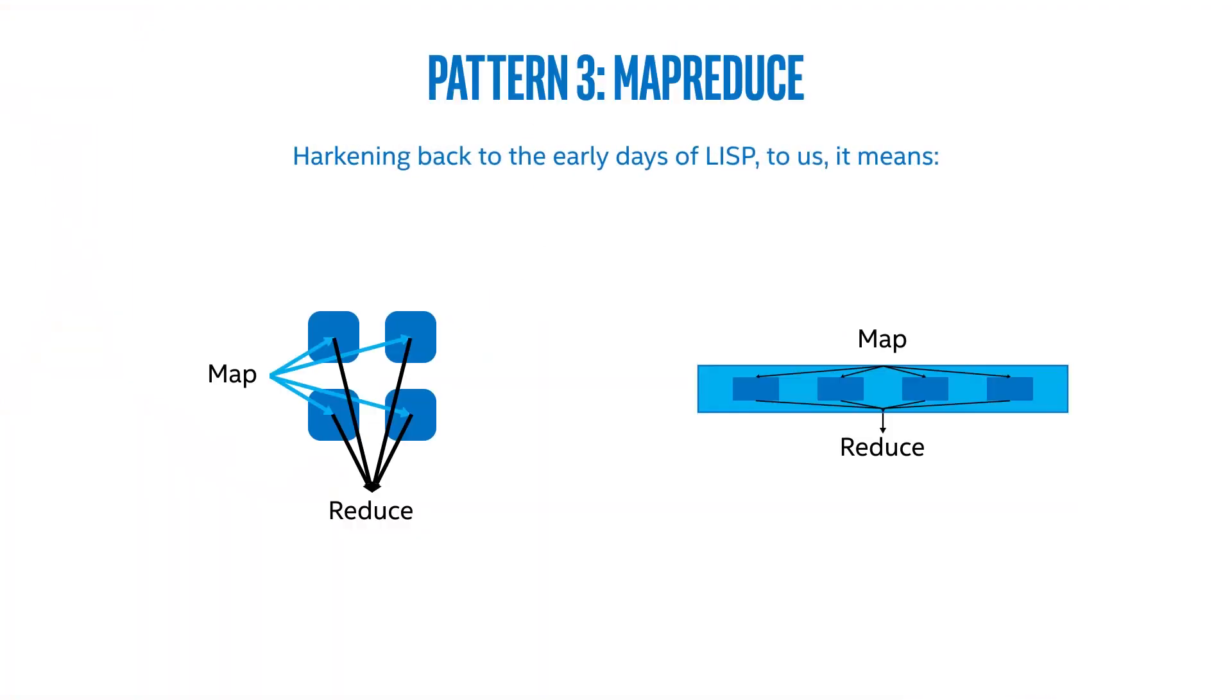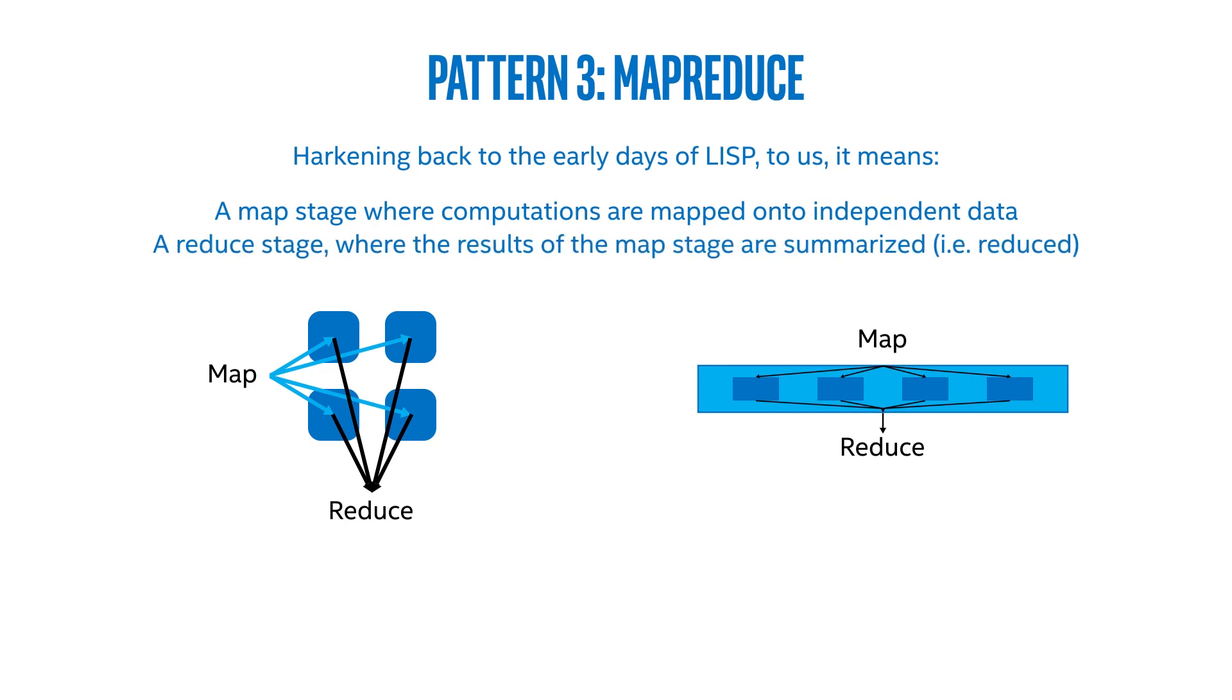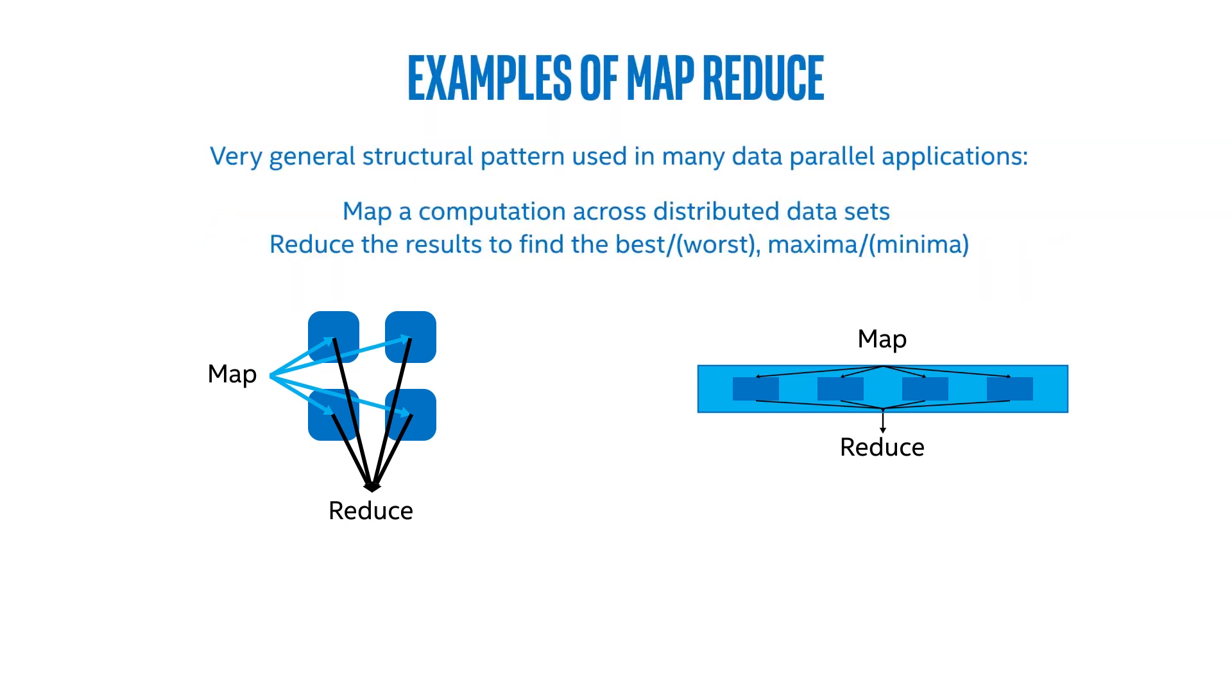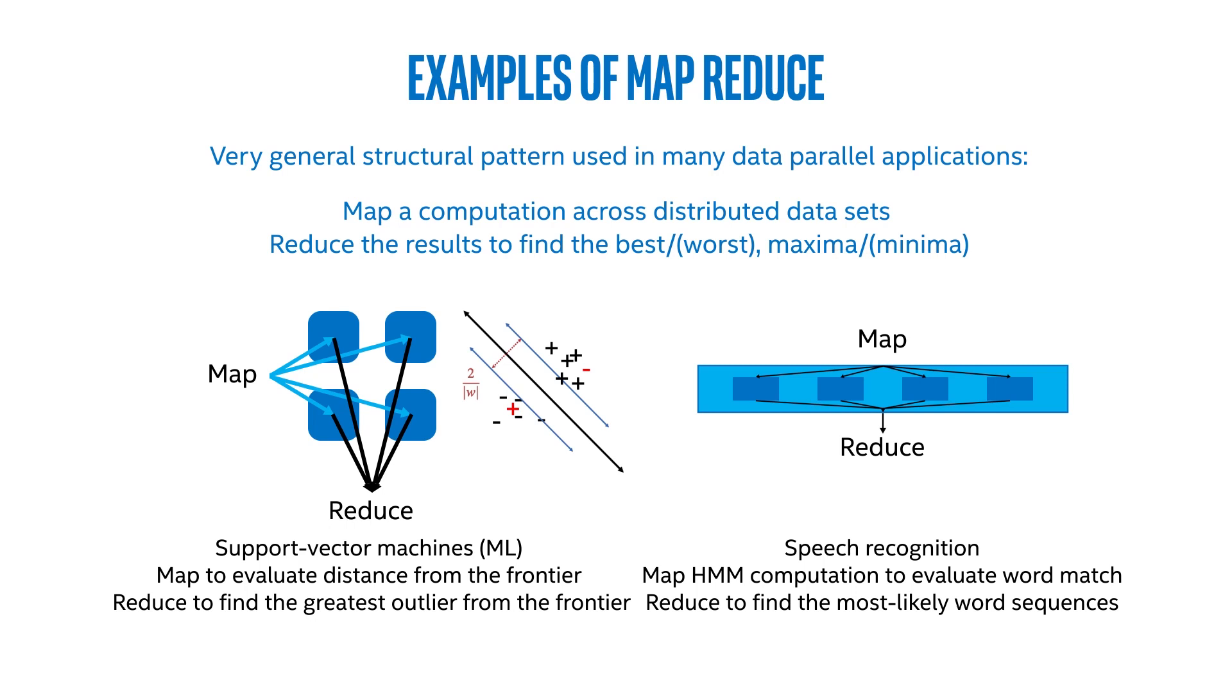The third structural pattern we consider is MapReduce. Now, I understand that Google has, to a certain extent, redefined MapReduce in cluster scale computing, but we're going to harken back to the early days of LISP. And for us, MapReduce means a map stage, where computations are mapped onto sets of independent data, and a reduce stage, where the results of the map stage are summarized, i.e., reduced. What are examples of this? Well, with our generalized notion of this, we see this apply to many data parallel applications. For example, in that same support vector machine computation I was talking about, the computation associated with identifying the outliers, that is itself mapped on, and then the greatest outliers are then the result of the reduction.